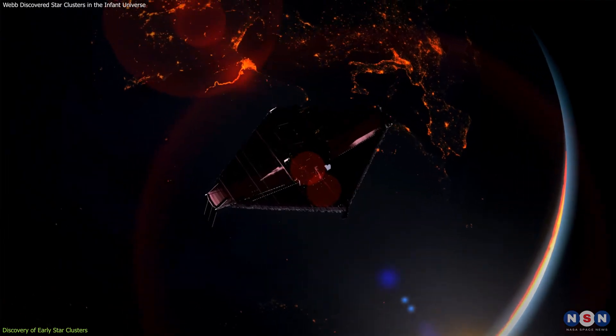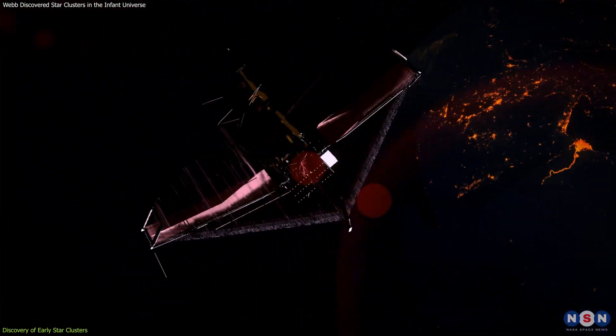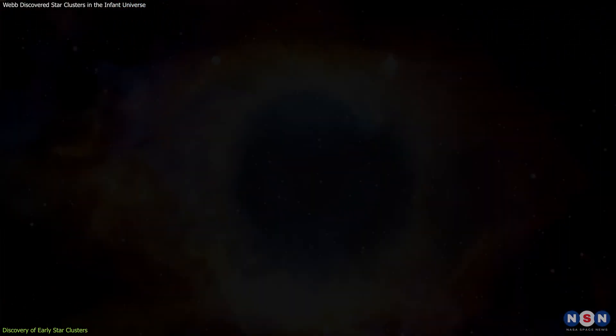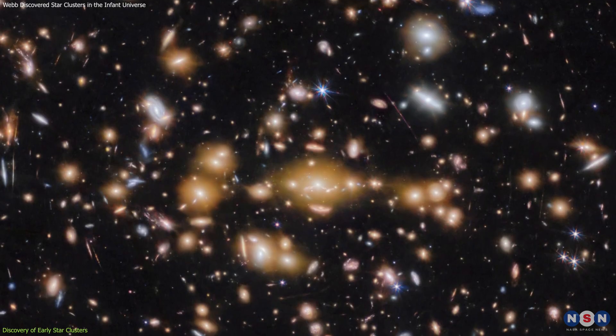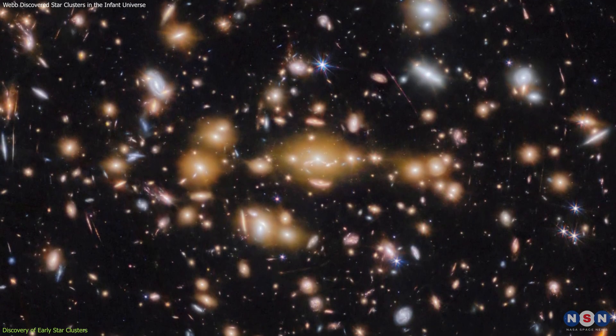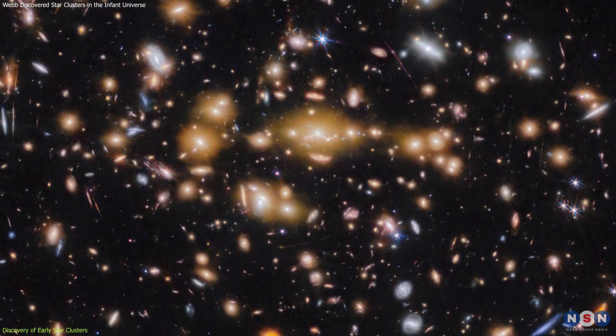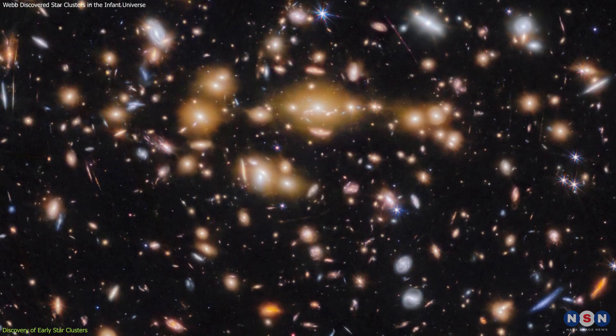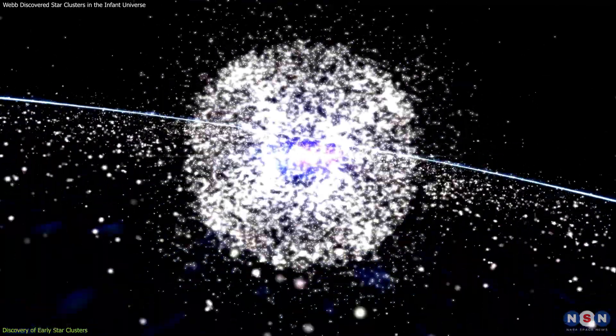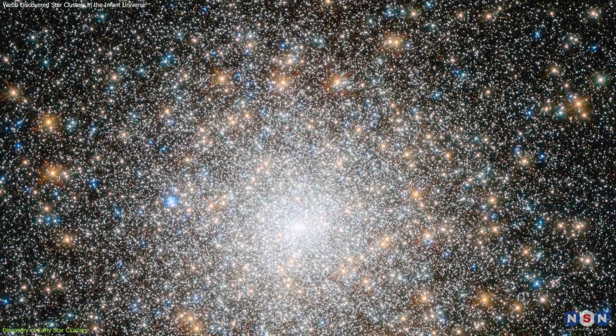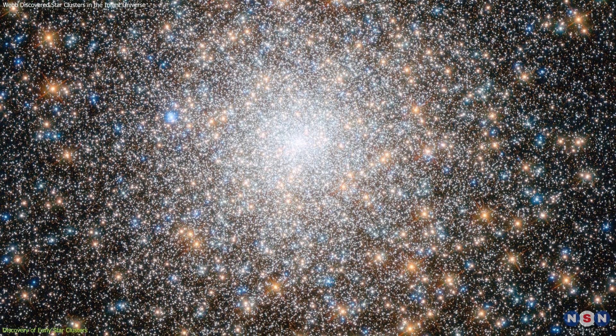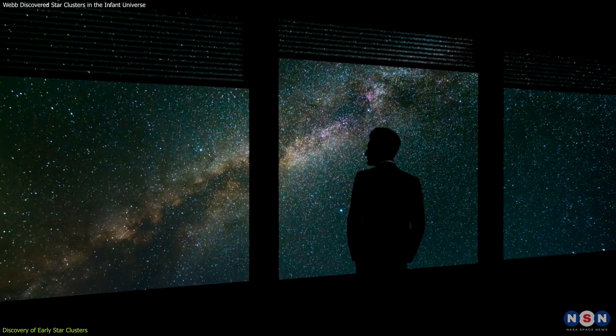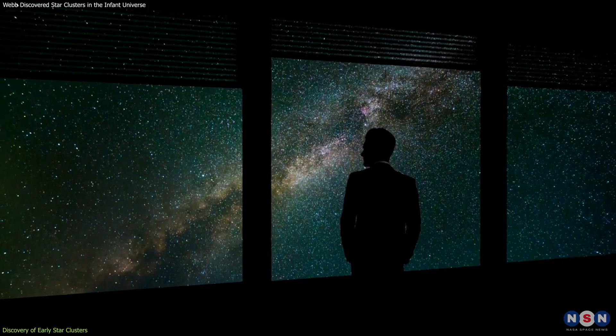Our story begins with an extraordinary feat of astronomical detective work by Webb. Tasked with peering back into the very dawn of the universe, the latest revelation concerns the Cosmic Gems Arc, a galaxy observed as it existed just 460 million years post-Big Bang. Within this galaxy, astronomers have identified what are now considered the universe's oldest known star clusters. But how did they accomplish this? And why is it a breakthrough?